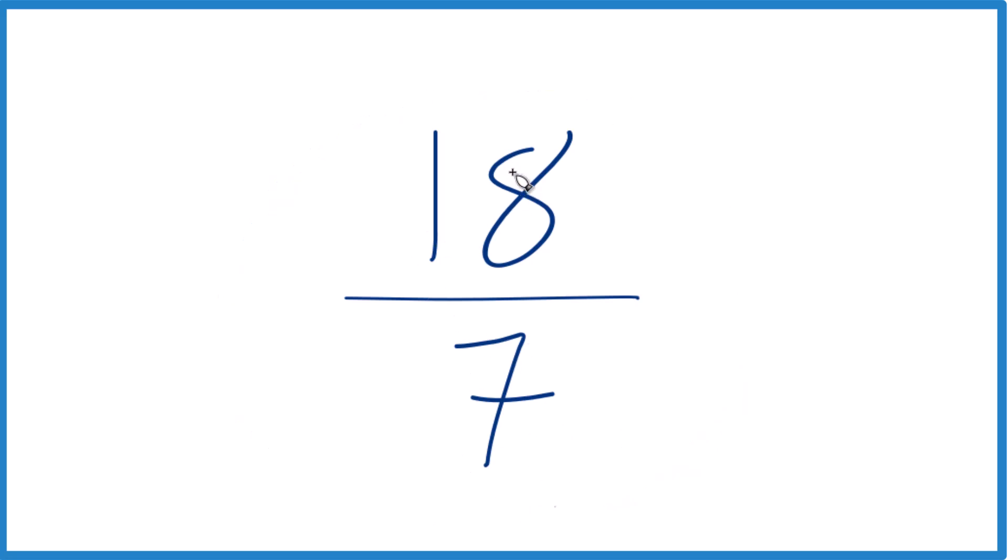So in terms of simplifying 18 over 7, the only whole number that goes evenly into 18 and 7 is 1. And 18 divided by 1 is 18, 7 divided by 1 is 7. So we're right back where we started. That means 18 sevenths is already simplified.